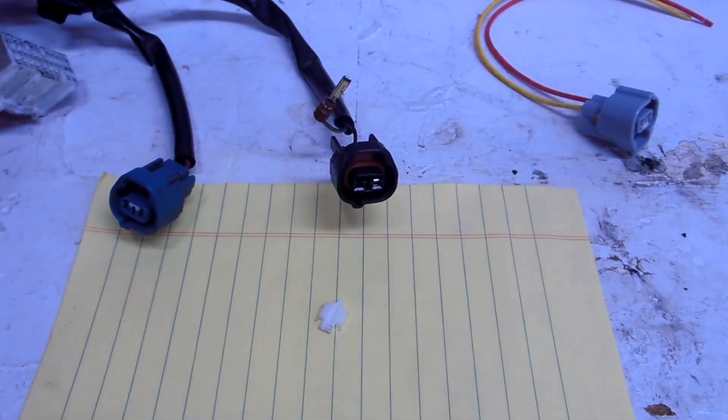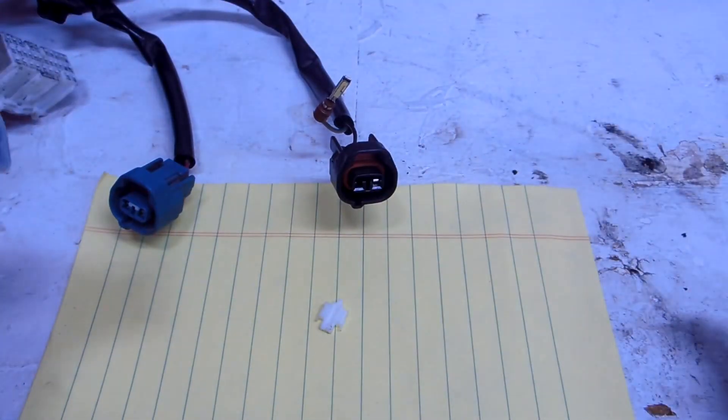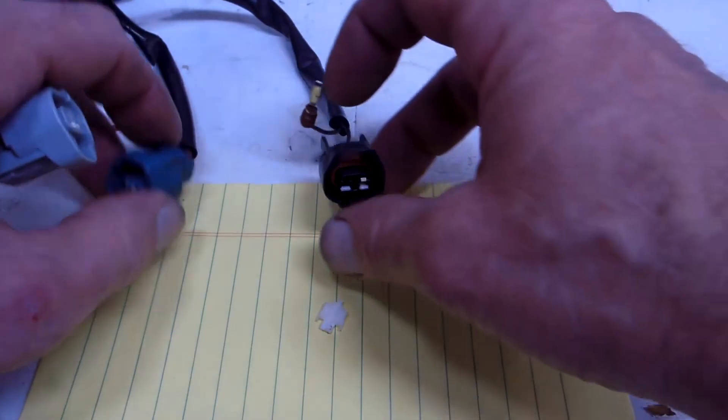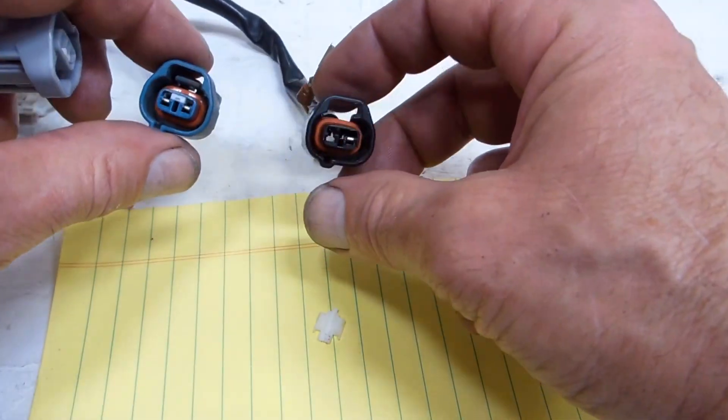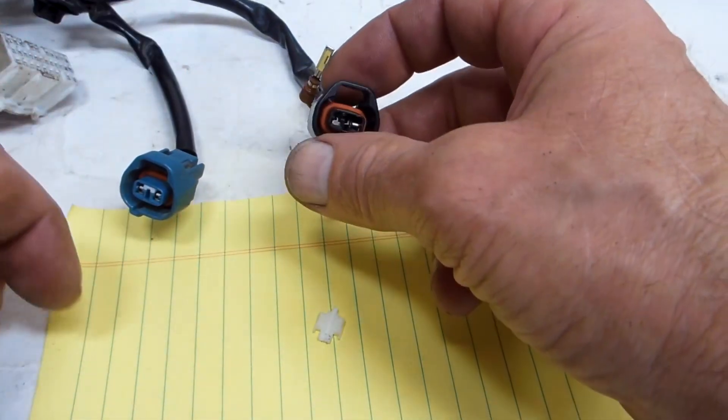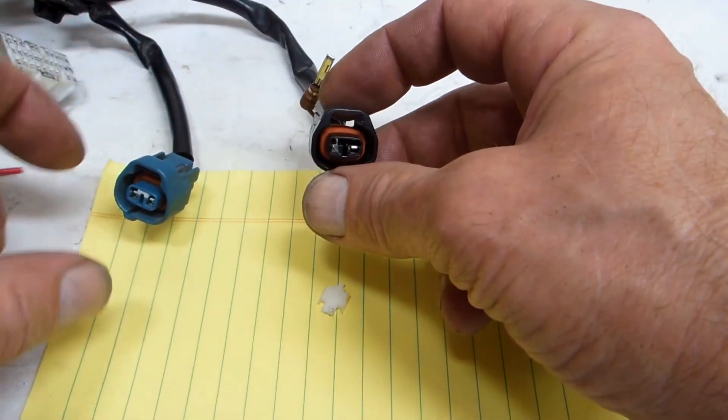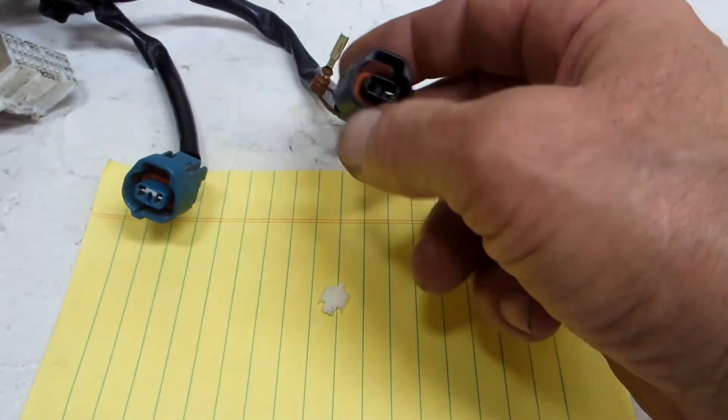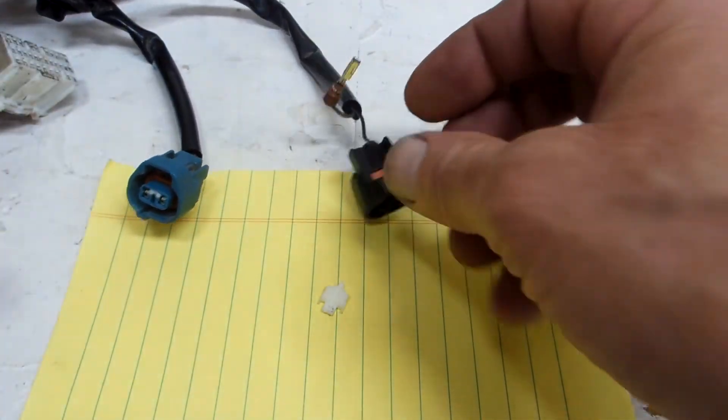This is how you can replace a Toyota connector without soldering or crimping. These two connectors are the same—this is a really common connector, but most connectors have the same method regardless of the shape. On this one I broke that little tab that holds it in. You can go on Amazon, Rock Auto, or eBay and buy replacement connectors.